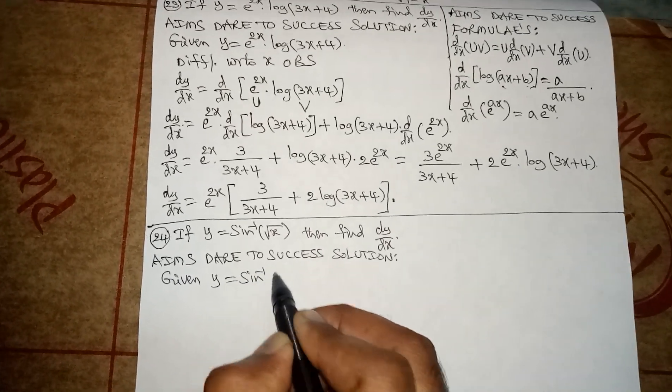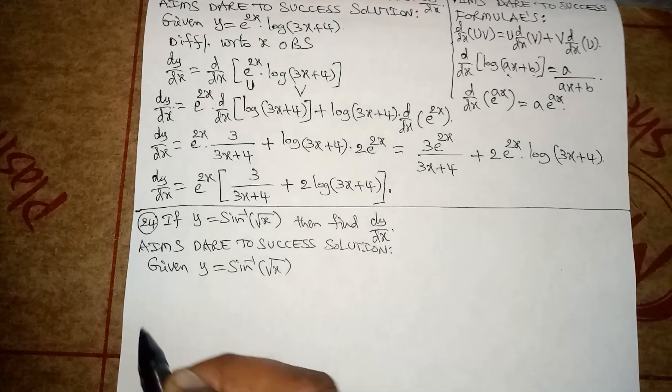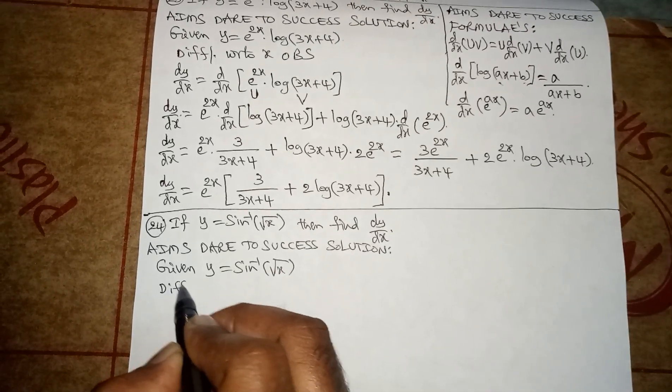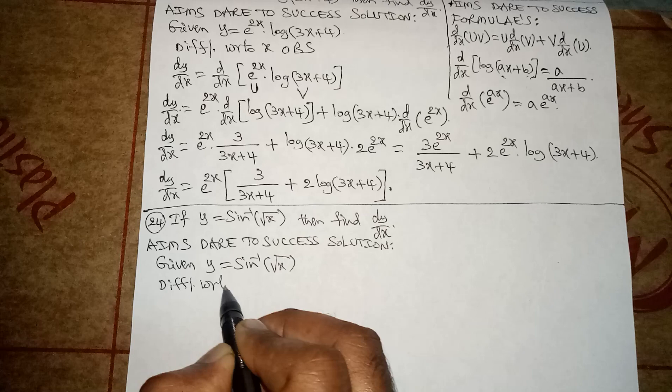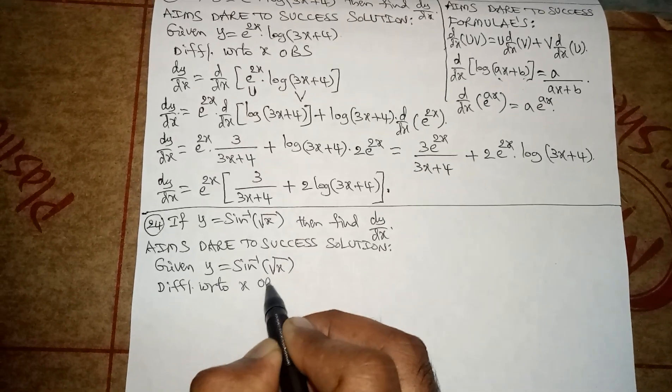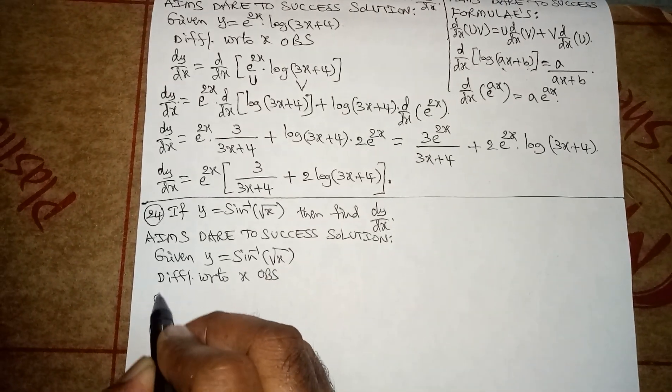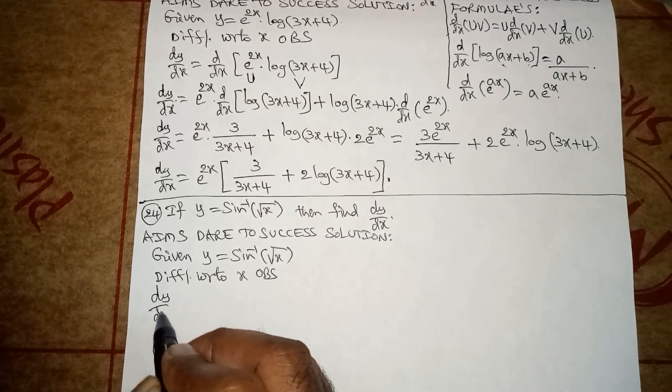Differentiating with respect to x on both sides, we get dy by dx equals d by dx of sine inverse of root x.